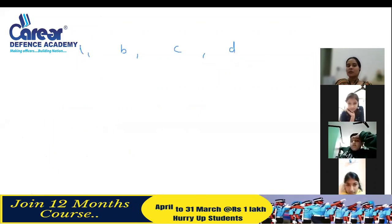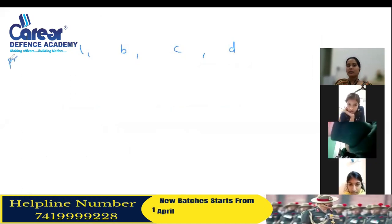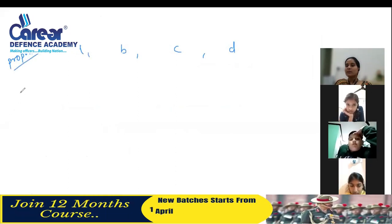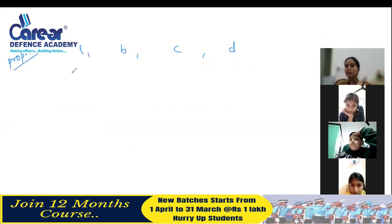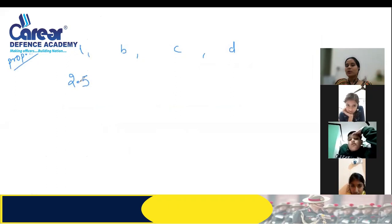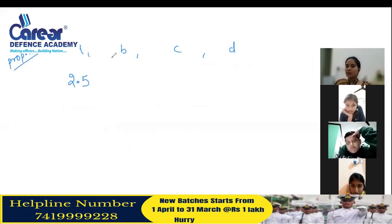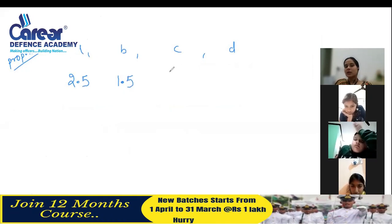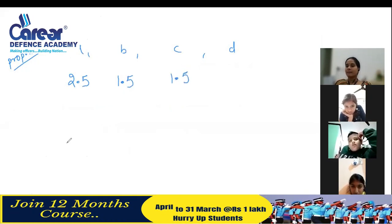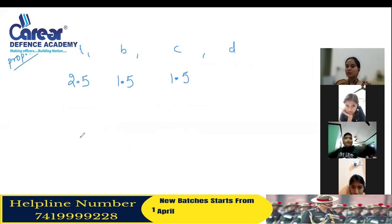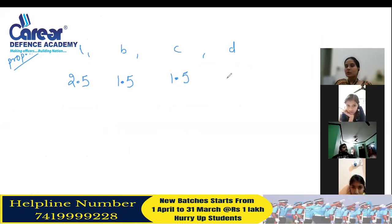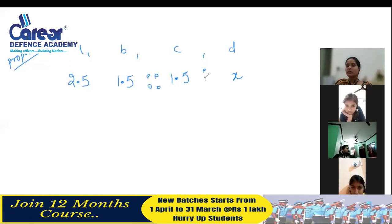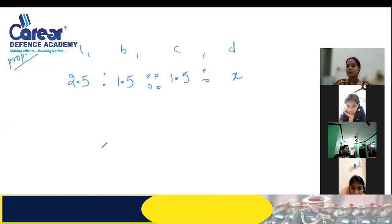When we have to find the third proportional, which is C — but we only have two numbers. In continued proportion, the second number repeats. So we write A to 2.5, then 2.5 again as the second number, and x as the third number we need to find.